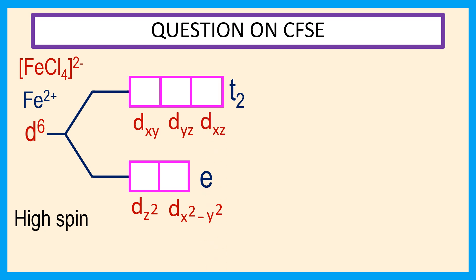d6 system contains 6 electrons. Distribution of electrons is 1, 2, 3, 4, 5, and 6. Therefore, electron configuration is e3 t2 3.